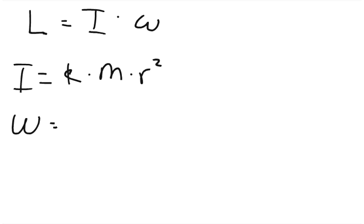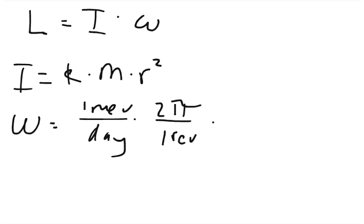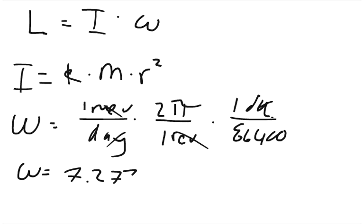We need to say that the angular speed of Earth is one revolution per day. We need to turn days into seconds and revolutions into radians, so we multiply this by 2π radians divided by one revolution, and then times this by one day over 86,400 seconds. So the angular speed is equal to 7.2722 times 10 to the negative 5th.